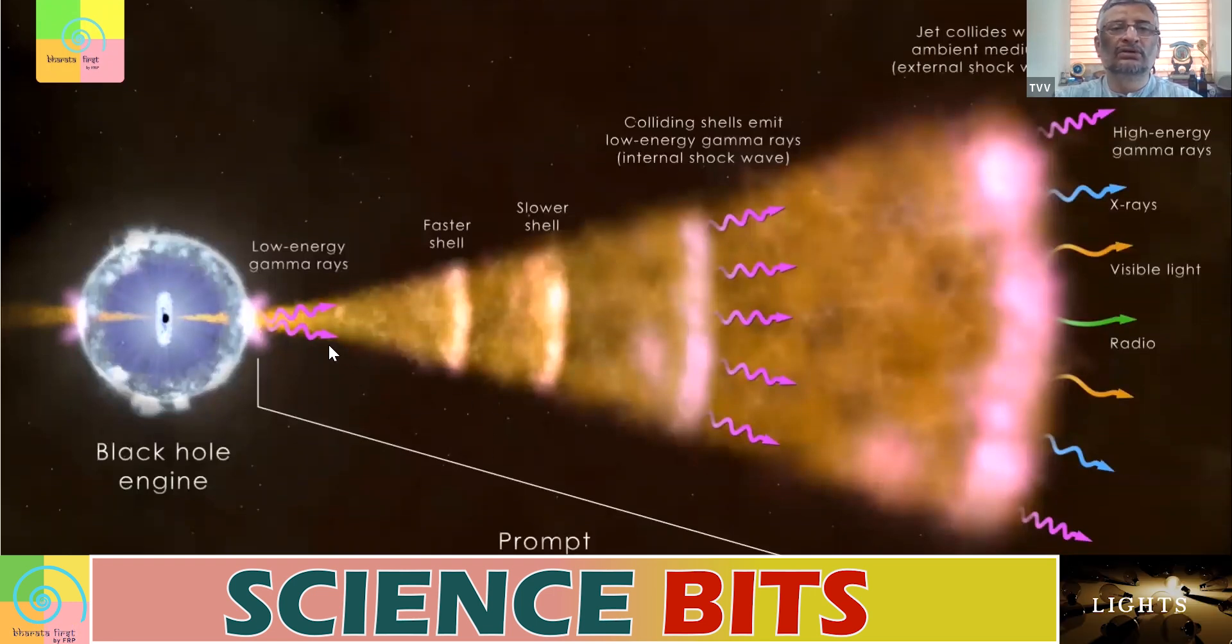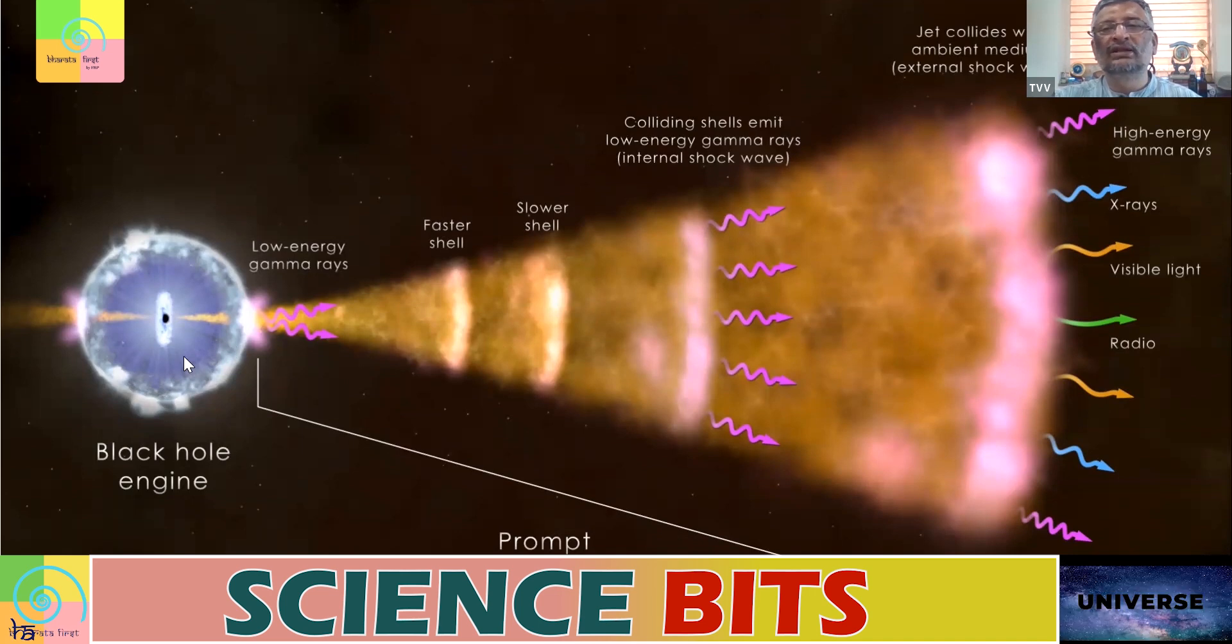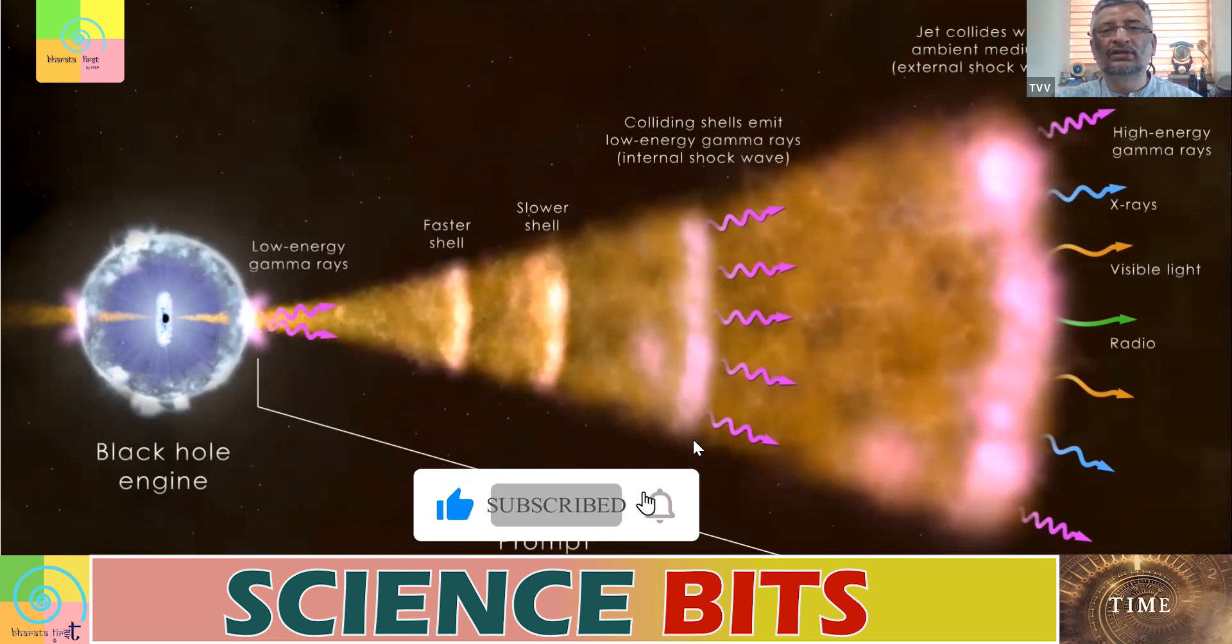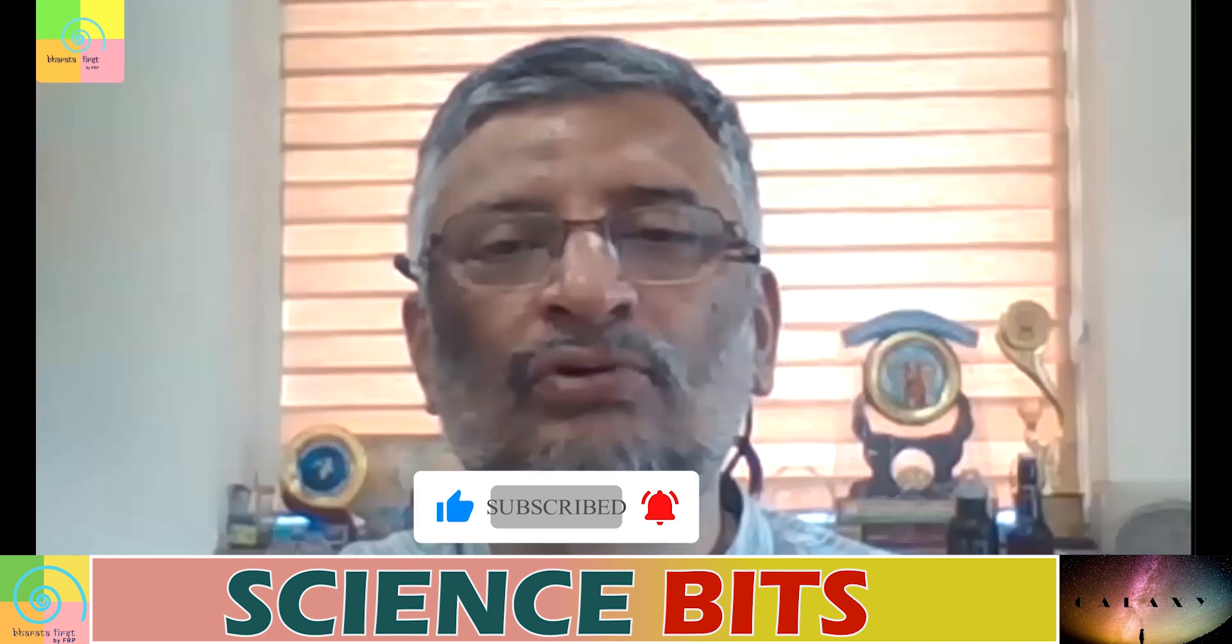So when the black holes are formed, that is when you get this gamma ray burst for a short time. Then after that, you get the afterglow of that black hole burst.